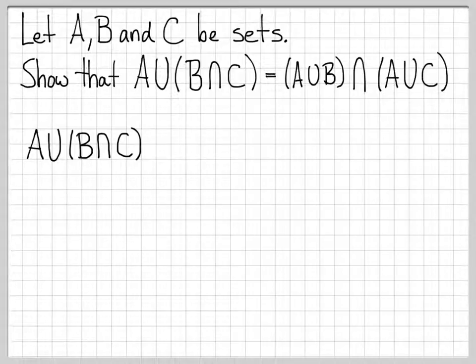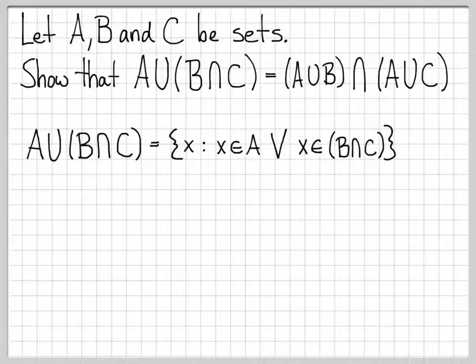So what we're going to do is we're actually going to start by writing down the left-hand set, the set A union B intersect C, and we're going to write down what this set is using our set notation. So we're going to say this is a set, so we're going to start off with a curly bracket. And this set is going to consist of a whole bunch of elements that we're going to call X. The criteria for X, though, to be an element of the set has to meet the definition of our set. So this is a set X such that X is in A or X is in B intersect C. That's what this set is.